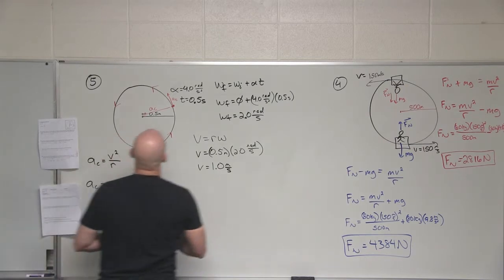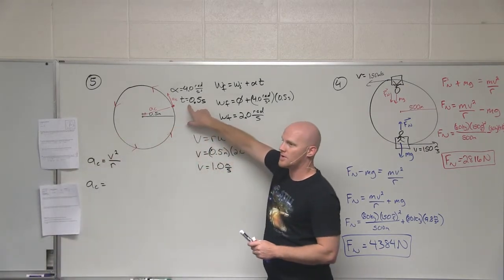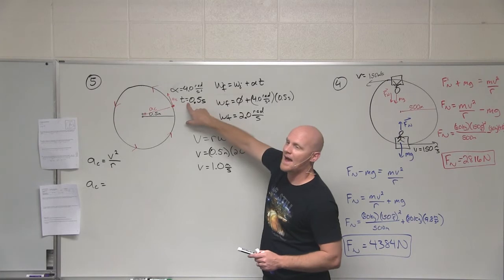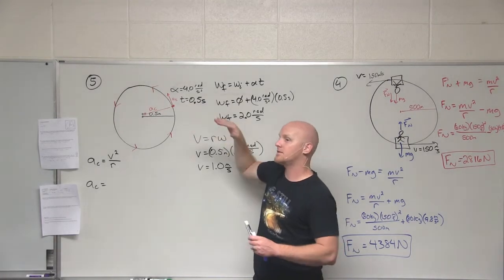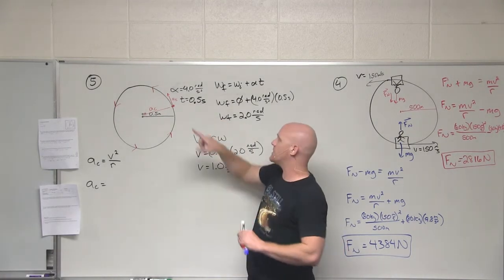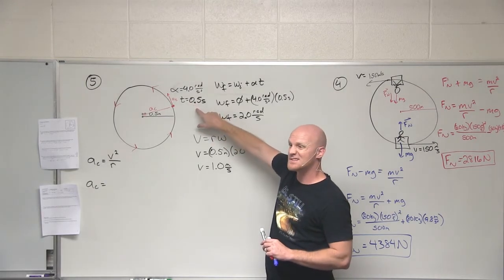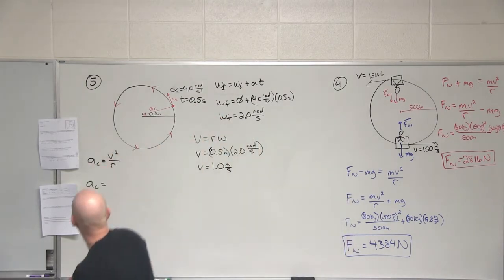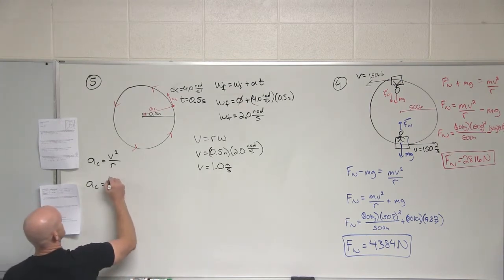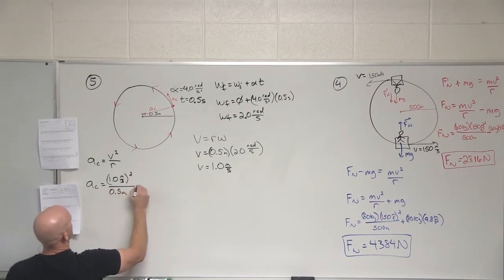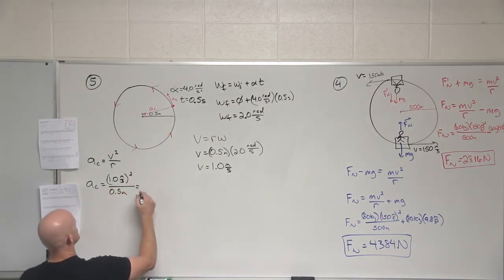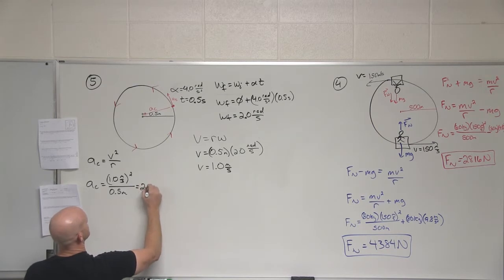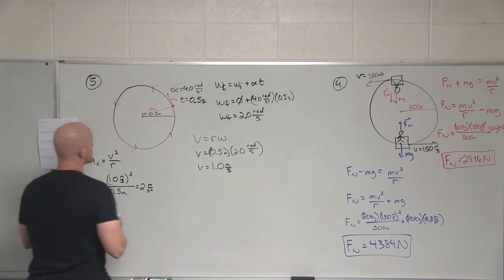I'm looking for the overall acceleration right at that time point at t equals 0.5 seconds. Not what was the average from zero to 0.5, but right at t equals 0.5, right at that instant, what is the overall acceleration? So in this case, what do we get for a centripetal acceleration here? Good. Alright. So that's our centripetal.